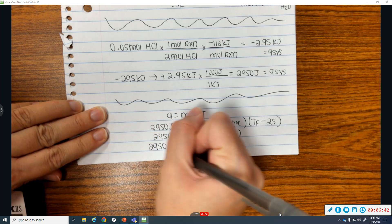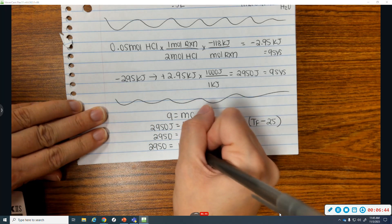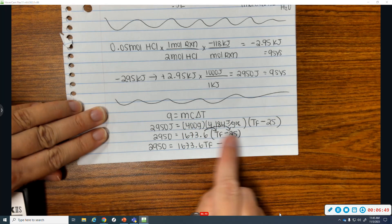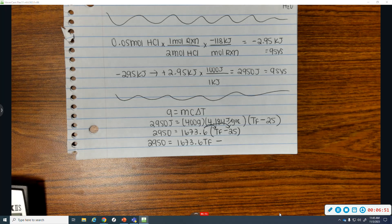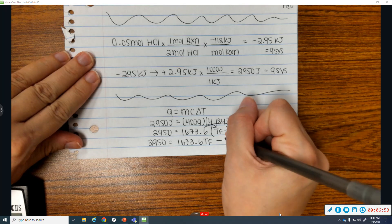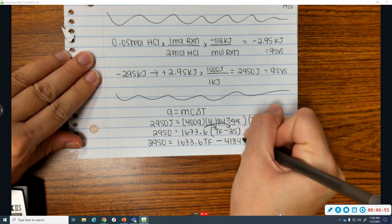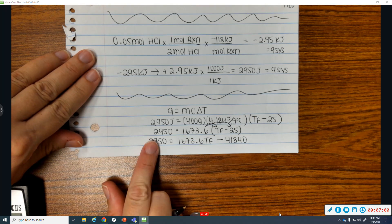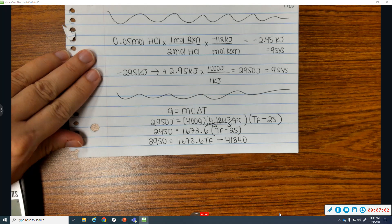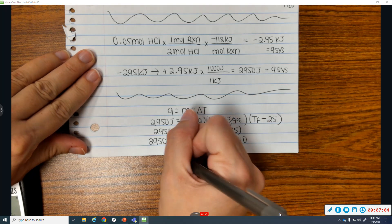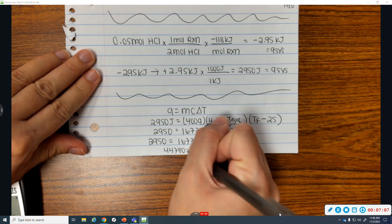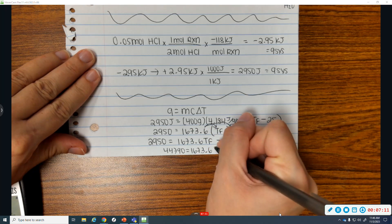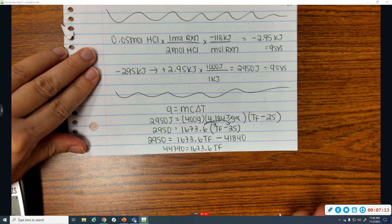So, 2,950 is going to equal 1,673.6 Tf minus this times 25 is a negative 41,840. I'm going to isolate my Tf. So, I'm going to add this number to both sides. That gives us 44,790 equals 1673.6 Tf. To isolate Tf, those are being multiplied.